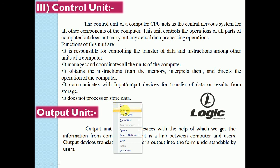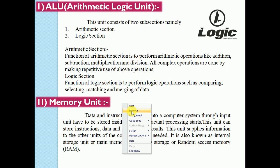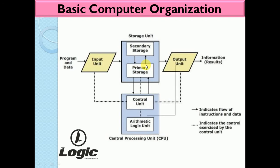Now we see the diagram of basic computer organization. This is the input unit, which inputs data to the computer system. This is the control unit, which controls all operations of the computer. This is the arithmetic and logic unit, in which arithmetic operations such as addition, subtraction, multiplication, and division, and logical operations such as comparing and matching, are performed.